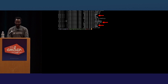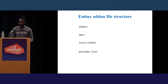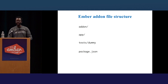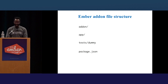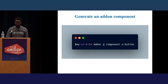This is the structure, the file layout of an add-on. I'm going to talk mainly about the add-on folder, the app, and test-dummy. The name is confusing, but test-dummy is actually a whole Ember app. Every time you build a new add-on, there is an Ember app embedded inside that lives inside test-dummy. It's mainly used for tests and documentation.